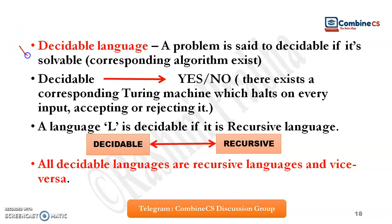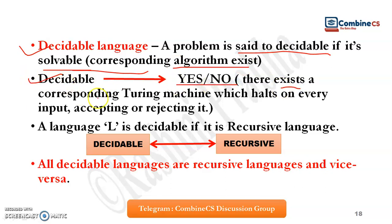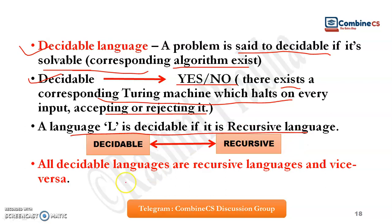Moving to the next topic: what is decidable? A problem is said to be decidable if it is solvable — a corresponding algorithm exists. Decidable means yes or no: there exists a corresponding Turing machine which halts on every input, accepting or rejecting it. We can conclude that a language is decidable if it is recursive, and all decidable languages are recursive languages and vice versa.